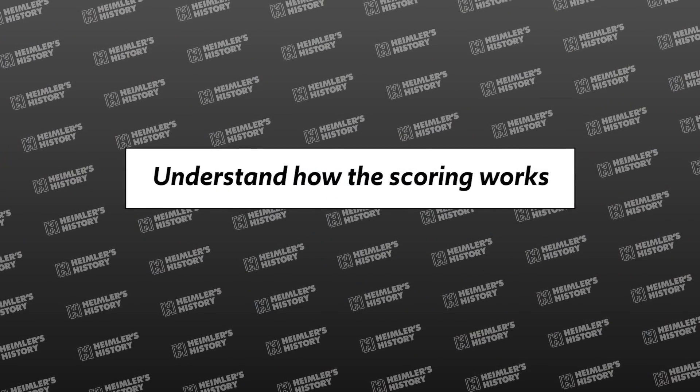Strategy three, understand how the scoring works. And this isn't a strategy as much as a mindset that will hopefully eliminate some stress. When you get to question 30 and something makes you realize that you got number 5 wrong, don't worry. You can actually miss quite a few and still be set for a 5.